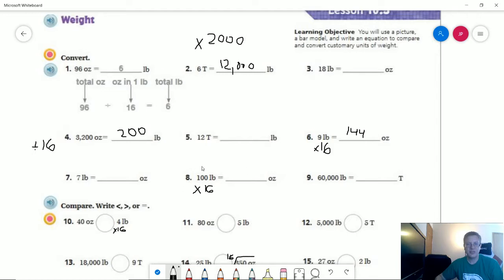Number eight, I can multiply my number of pounds times 16 to get 1,600 ounces.